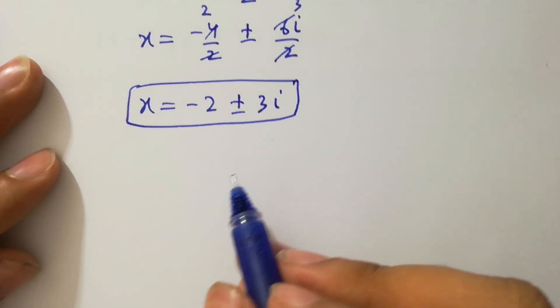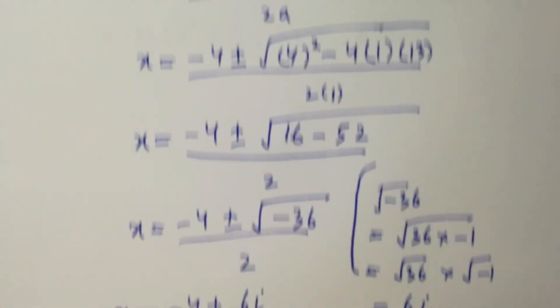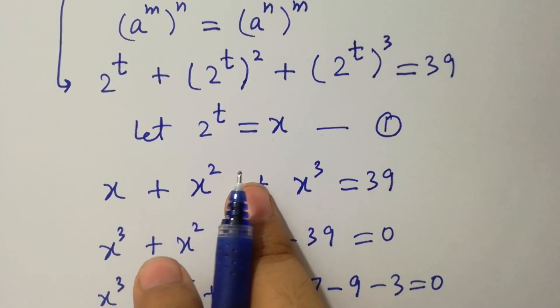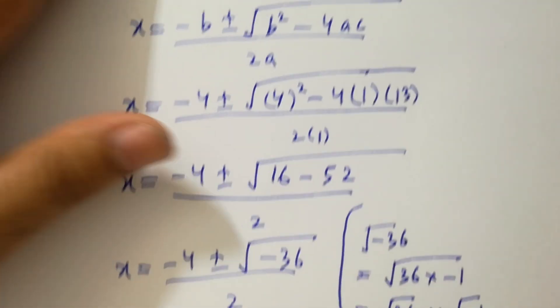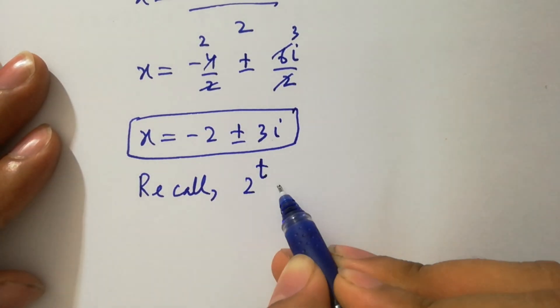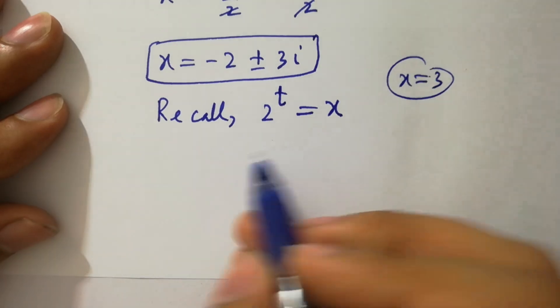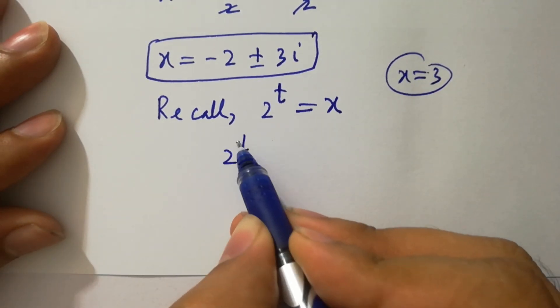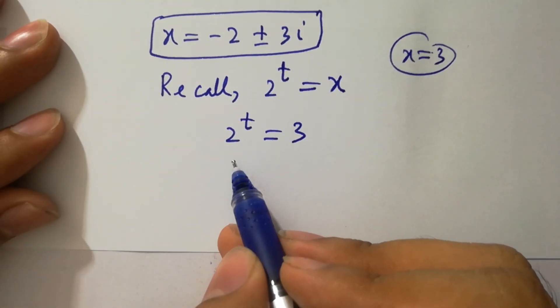In the next step, recall that 2 to the power t equals x because we want the value of t. Since x equals 3 is our real solution, we have 2 to the power t equal to 3. To find t, take log on both sides.